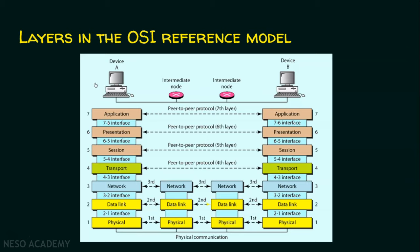The user sitting at the source will open an application, and that application generates the data. The data generated by the application layer is handed over to the presentation layer, then the session layer, then the transport layer, then the network layer, then the data link layer, and finally the physical layer.